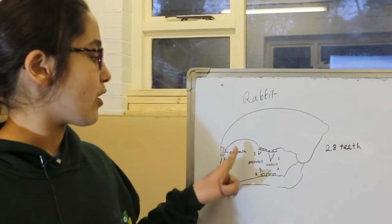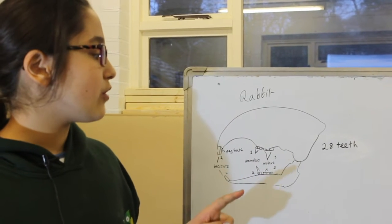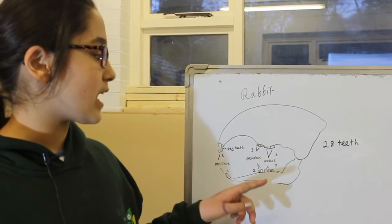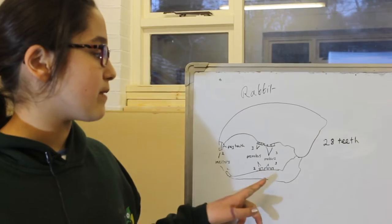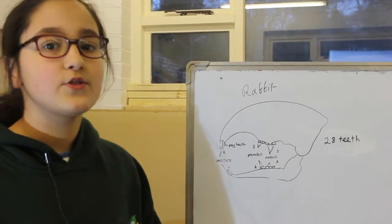They have peg teeth only just on the top. They also have molars. They have premolars and molars on the top and the bottom. Rabbits have a total of 28 teeth.